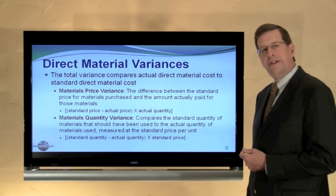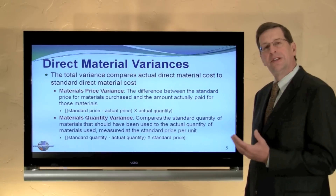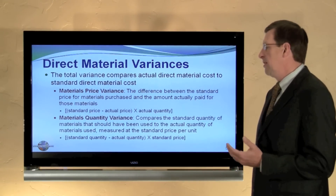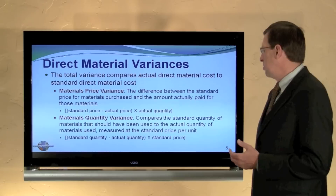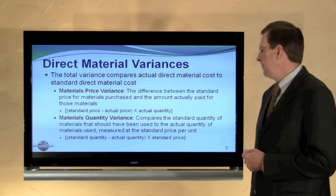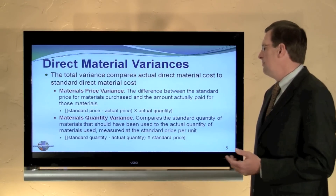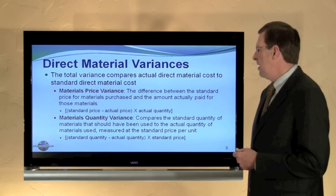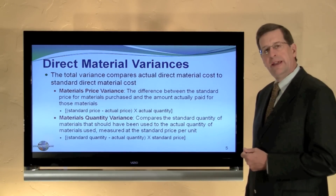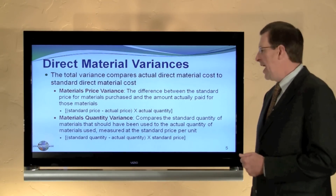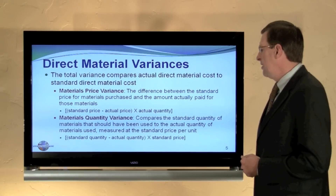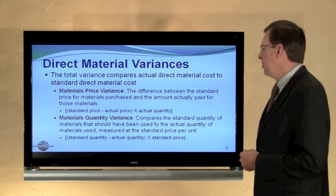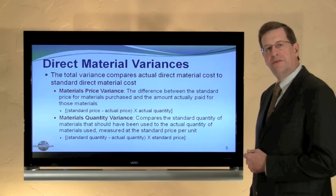The materials quantity variance speaks to the usage. It compares the standard quantity of materials that should have been used to produce the actual quantity of output, and it measures the difference at the standard price. By formula: standard quantity that should have been used minus the actual quantity that was used, times the standard price per unit, gives us the material quantities variance.